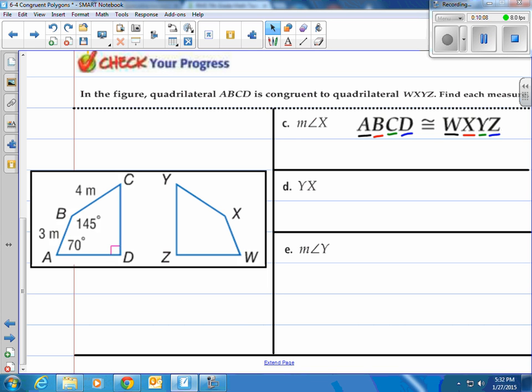The measure of angle X, we're talking about this one right here, it's got to be the same as the measure of angle B. Do they give that to us? Let's take a look. Yeah, they do. So the measure of angle B is going to be the same as the measure of angle X. We would write down the measure of angle X is equal to 145 degrees because it's the same measure as angle B.